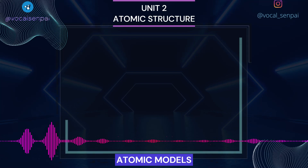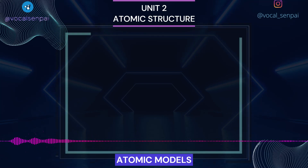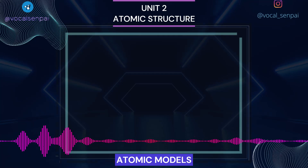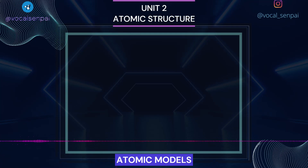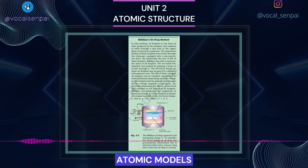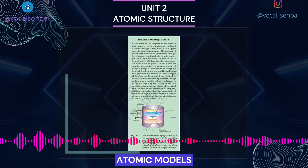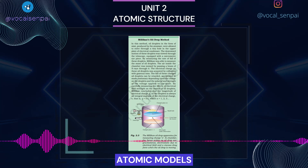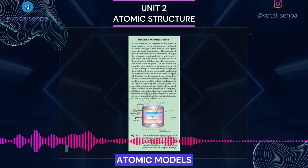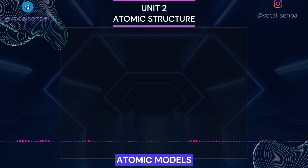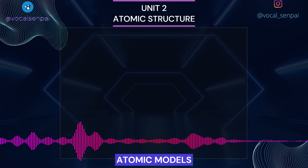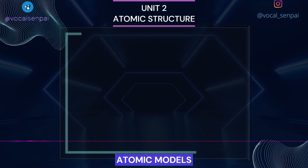Atomic Models: Observations obtained from the experiments mentioned in the previous sections have suggested that Dalton's indivisible atom is composed of subatomic particles carrying positive and negative charges. The major problems before the scientists after the discovery of subatomic particles were: to account for the stability of atom; to explain the formation of different kinds of molecules by the combination of different atoms; and to understand the origin and nature of characteristics of electromagnetic radiation absorbed or emitted by atoms. Different atomic models were proposed. Two of these models — one proposed by J. J. Thomson and the other by Ernest Rutherford — are discussed below.